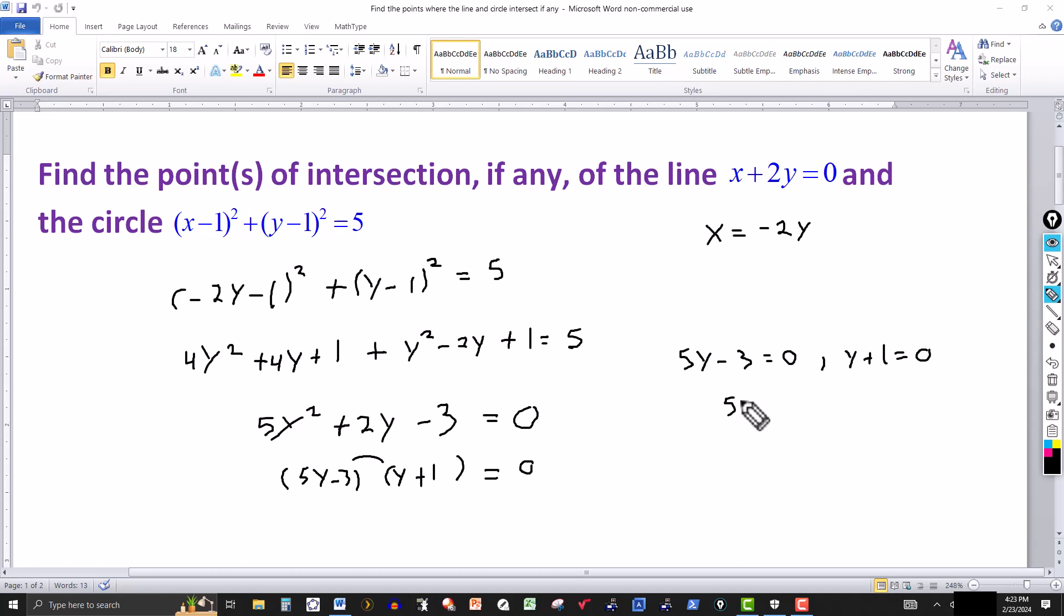Now we solve each of these linear equations here for y. Add 3 to both sides here. You get a 3 there. And then divide both sides by 5, I get y can be 3/5. And then y + 1 = 0, that means that y could be negative 1.